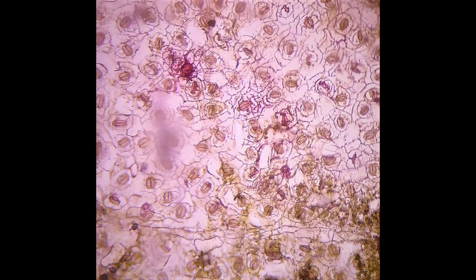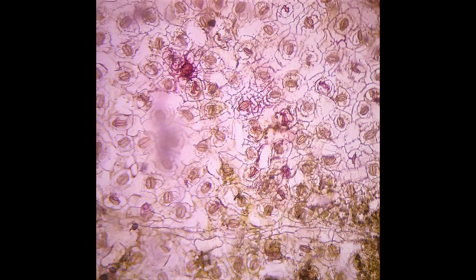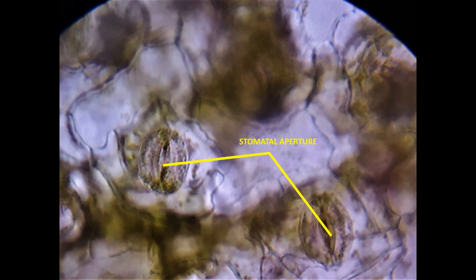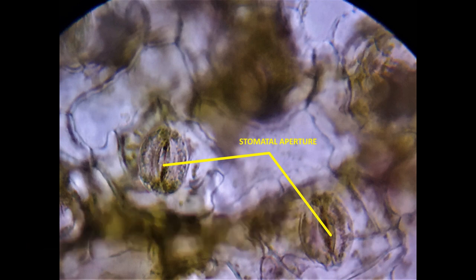Under 10x magnification, the epidermal cells are visible which are irregular in outline and have no intercellular spaces. Many small pores are seen scattered among the epidermal cells, and each pore is guarded by two bean-shaped guard cells, each containing chloroplasts and a nucleus.